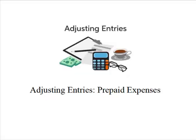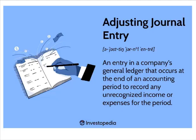Hey everybody, it's Professor Williams and I want to look at adjusting entries. Although there are many types of adjusting entries, we're going to focus on prepaid expenses. An adjusting entry is an entry made in our general ledger at the end of an accounting period to recognize any unrecognized income or expenses for the period. In accrual accounting, you want to make sure that revenues and expenses are matched to the period.